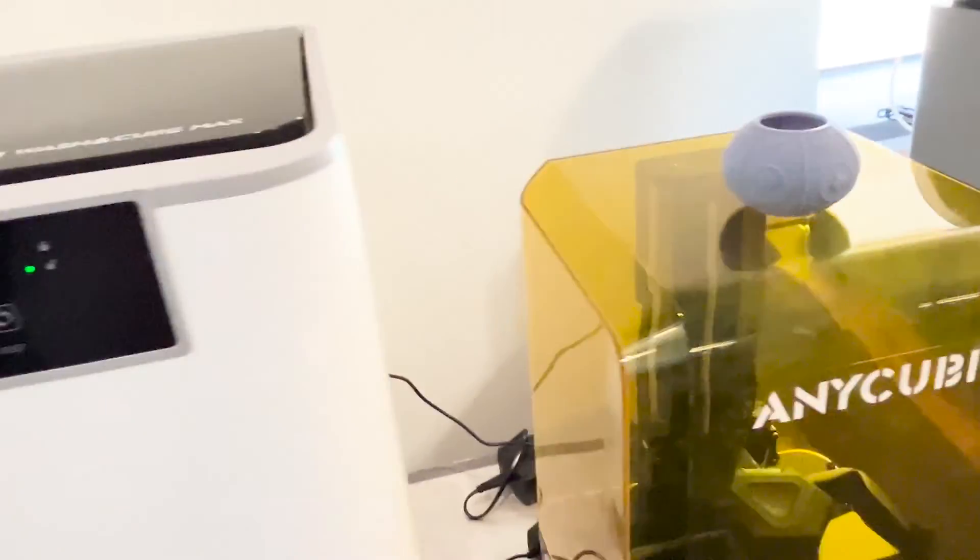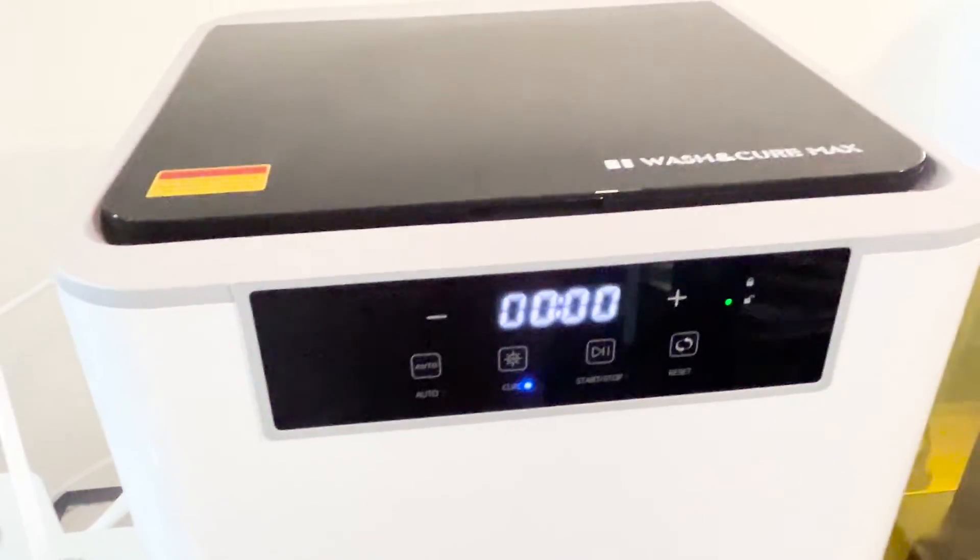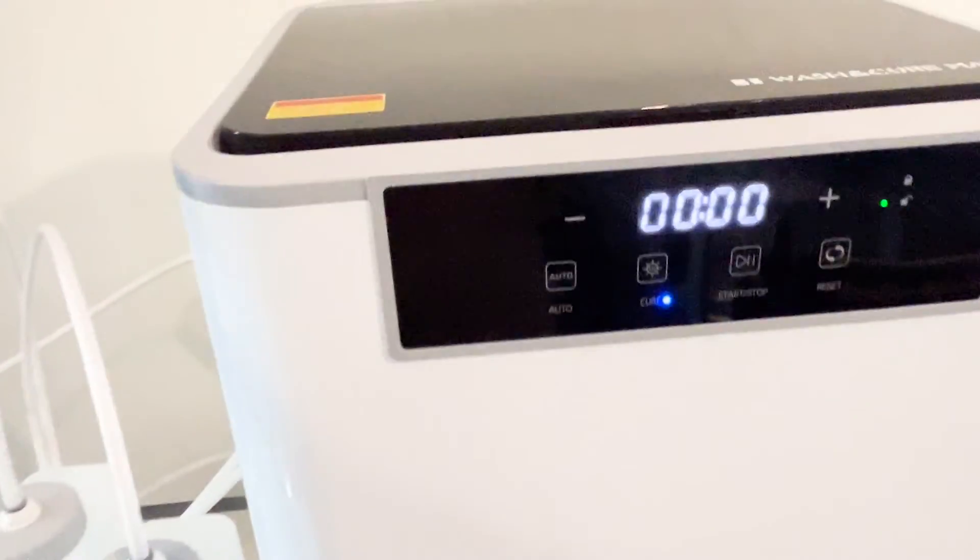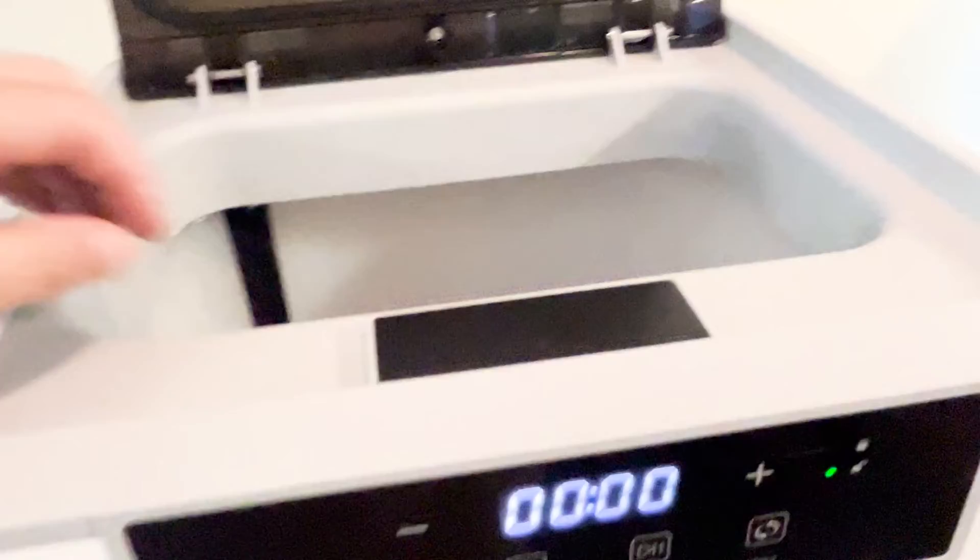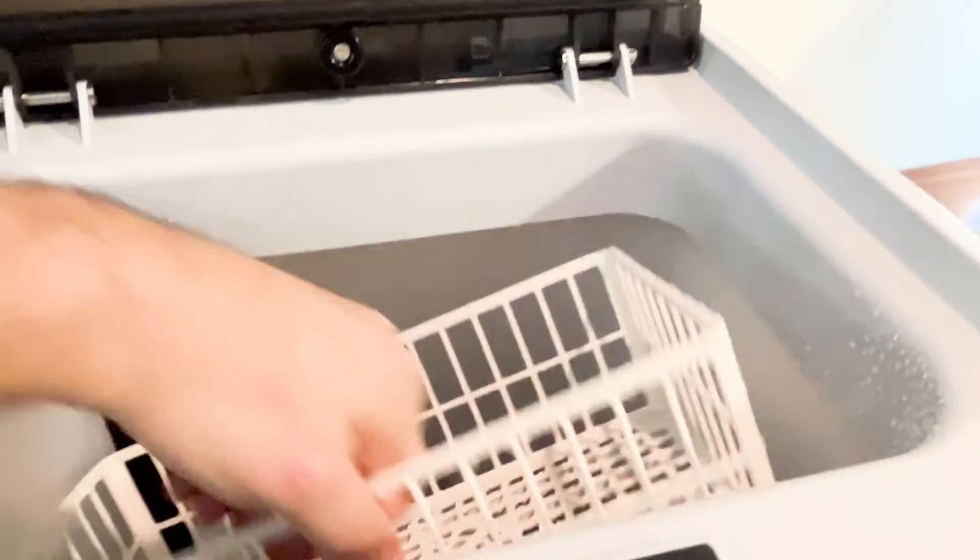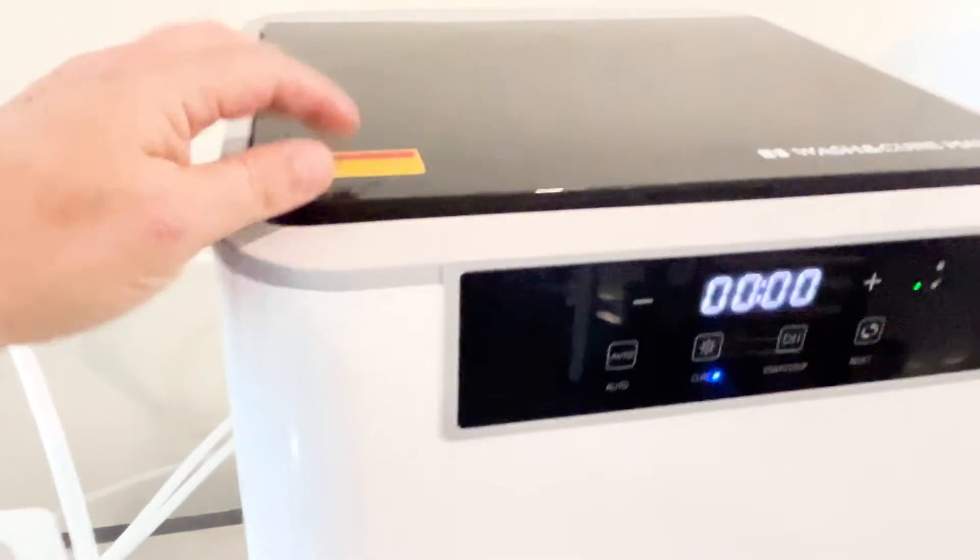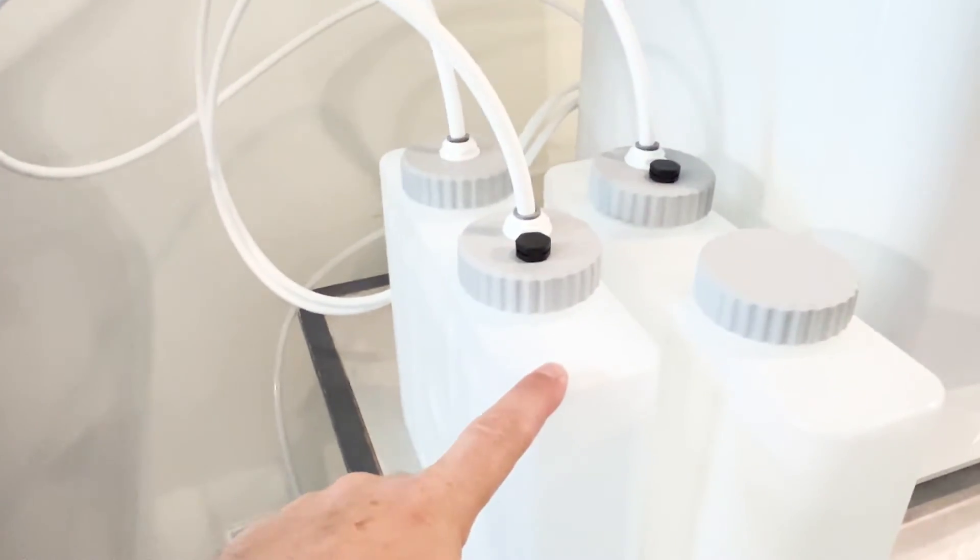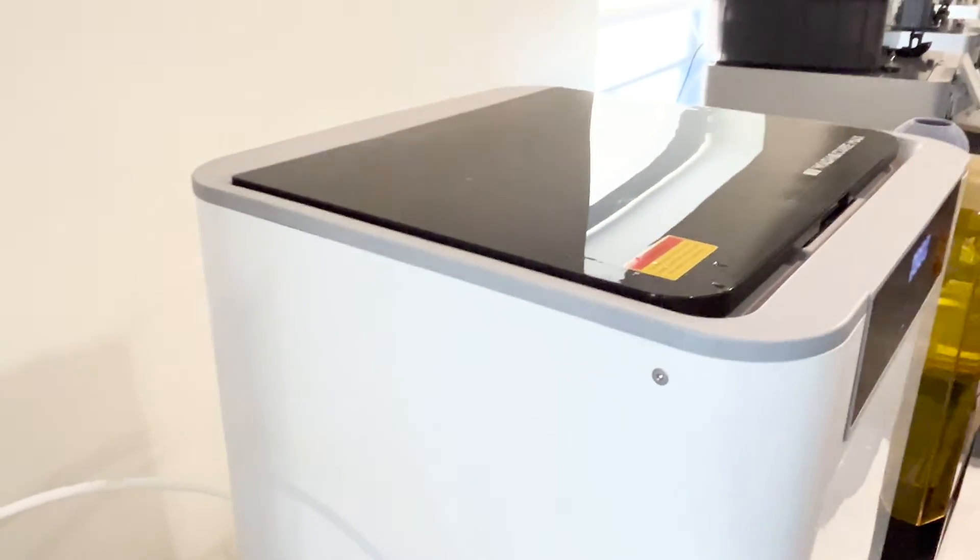The other cool feature, we got the Wash & Cure Max station because we were tired of the mess of the other one. Man, this thing is like a washing machine. Open this up. You've got the basket inside here that you put your parts down into. Close the lid. Run it through a cycle. And it runs through alcohol. And it also runs through a water rinse. Automatically. And then, of course, it actually cures the parts as well.